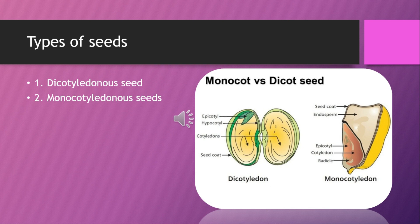Monocotyledon seeds have only one cotyledon. In such seeds, food is stored in the endosperm. Examples include maize, rice, wheat, and others.